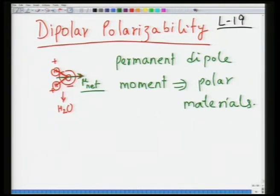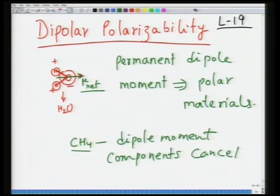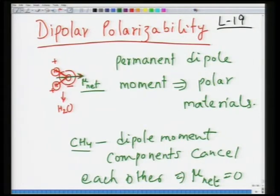On the other hand, take methane, CH₄ — here all dipole moment components cancel each other, so μ_net = 0. A symmetric molecule like methane will not have a dipole moment, whereas an asymmetric molecule like water will. Materials having a permanent dipole moment are called polar materials; materials which do not have a permanent dipole moment are called non-polar materials.